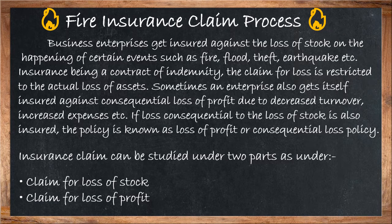We will now see the fire insurance claim process. Business enterprises get insured against the loss of stock on the happening of certain events such as fire, flood, theft, earthquake, etc. Insurance being a contract of indemnity, the claim for loss is restricted to the actual loss of assets. Sometimes an enterprise also gets insured against consequential loss of profit due to decreased turnover, increased expenses, etc. If loss consequential to the loss of stock is also insured, the policy is known as a loss of profit or consequential loss policy. Insurance claims can be studied under two parts: claim for loss of stock, and claim for loss of profit.